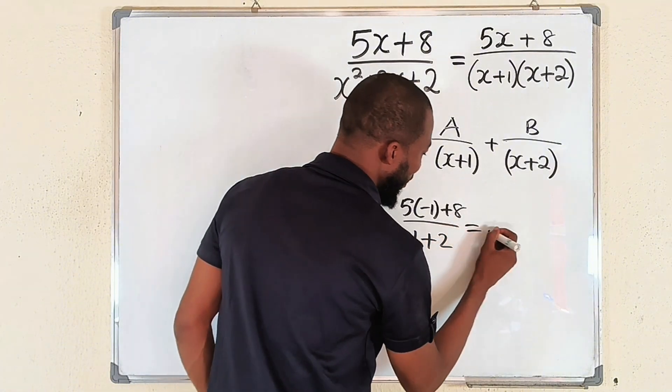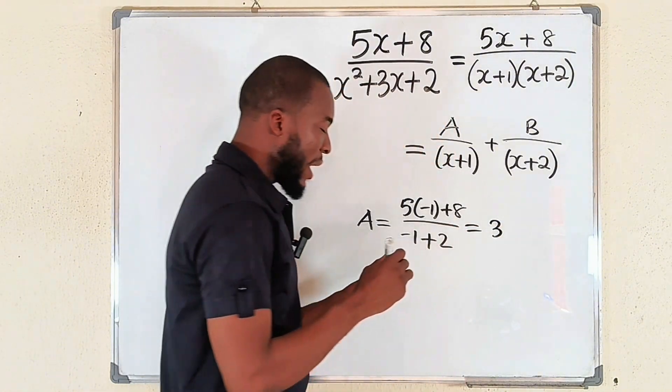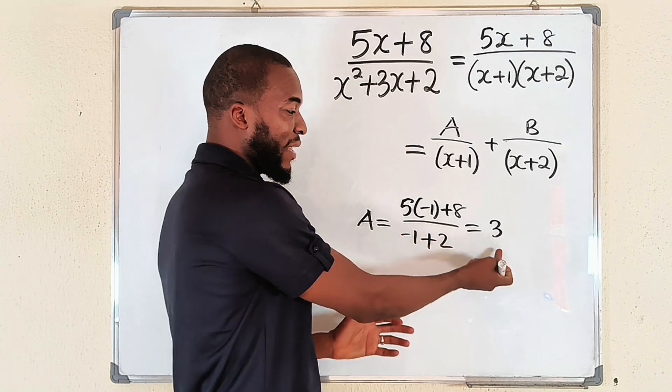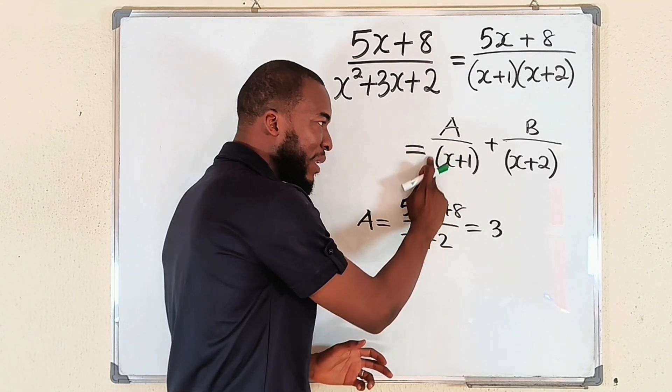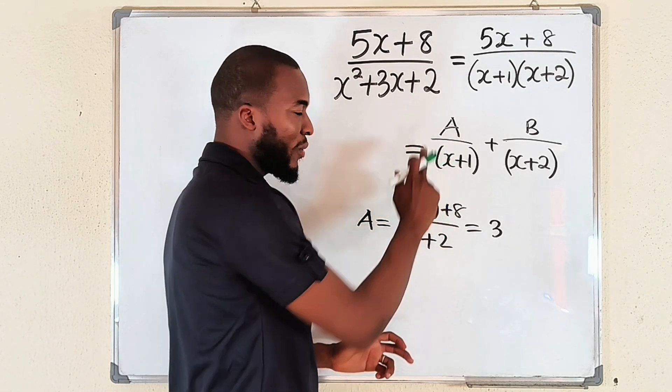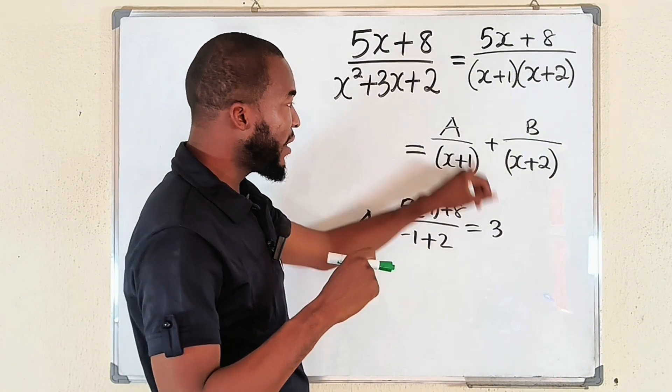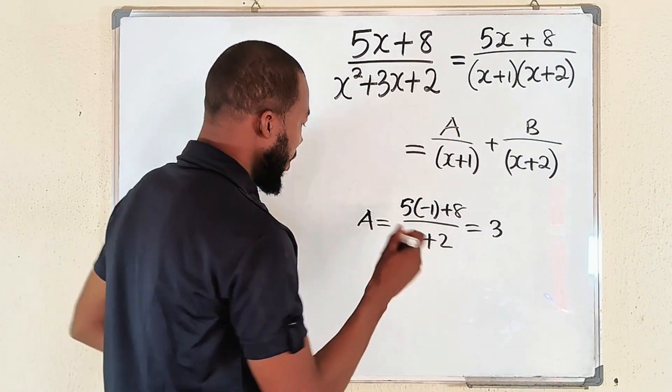So it means that A is equal to 3. Had it been we got a fraction, make sure that in the end the denominator should be written beside this factor. But since it is only a constant, the number 3, just replace it with A. Then find B.